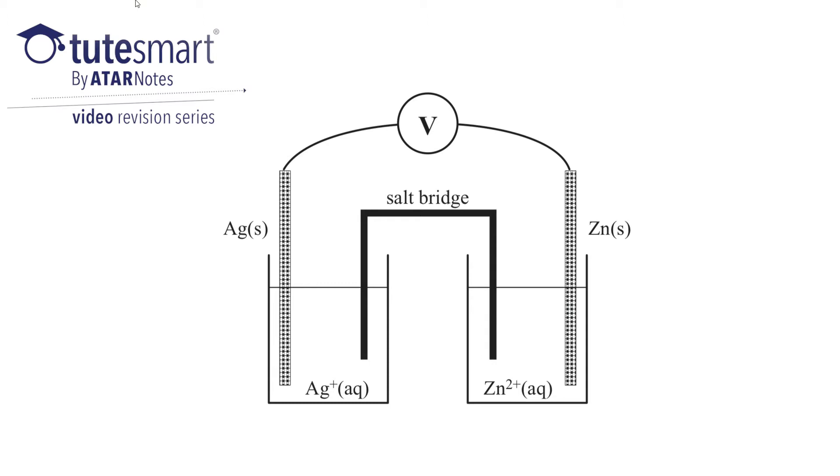In a galvanic cell, we have two electrodes. In this case, we have a silver electrode and a zinc electrode.